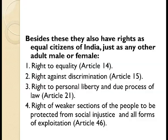These are the specific rights given to children. However, this is not the totality — there are other rights as well, because children are equal citizens of India just as any other adult. These include: right to equality given by Article 14; right against discrimination awarded by Article 15; right to personal liberty and due process of law given by Article 21; and right of weaker sections to be protected from social injustice and all forms of exploitation by Article 46.